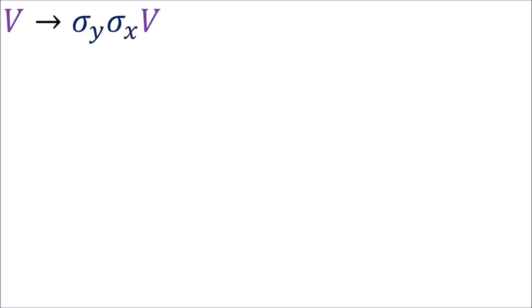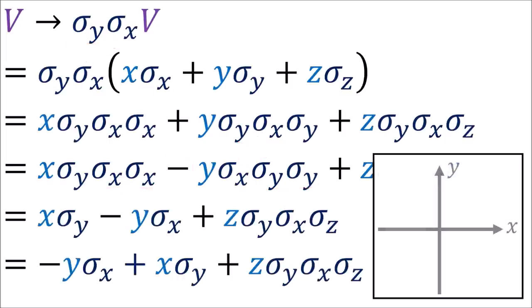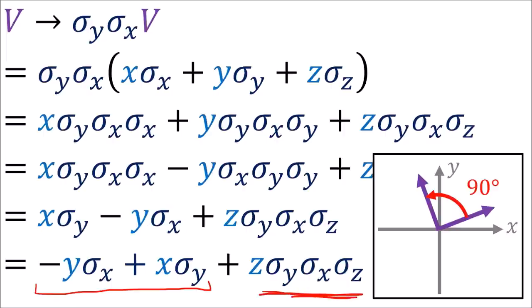Just for curiosity's sake, let's see what happens if we try transforming v using a single-sided transformation instead of a double-sided transformation. If we work through the algebra, we get that the xy components have been rotated by 90 degrees in the xy plane. However, the z component has come out wrong, with sigmas that cannot be meaningfully simplified. So doing a double-sided transformation is required to make all the basis sigmas work out properly.